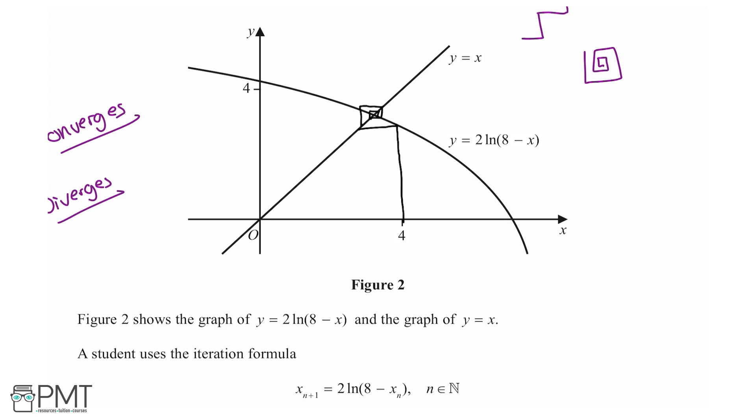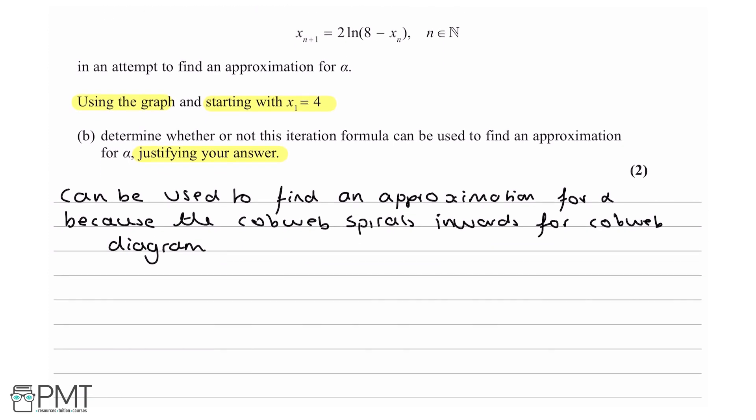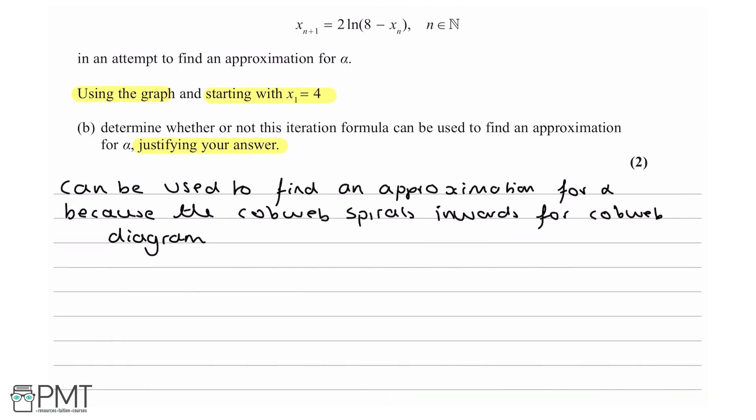The second mark we get comes from our argument or justification of our answer. To get this mark, you need to explicitly state it can be used—this one's important, in the mark scheme it's bolded which means the examiners are looking for it—and also you need to say the cobweb spirals inwards. Both of these points will get you your second mark. If you're missing either one of them, you cannot get that second mark.